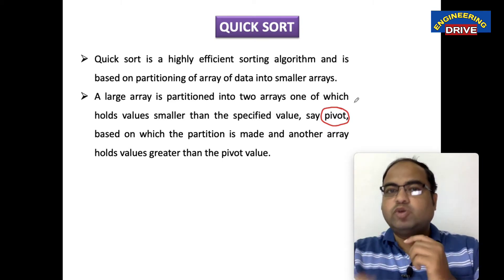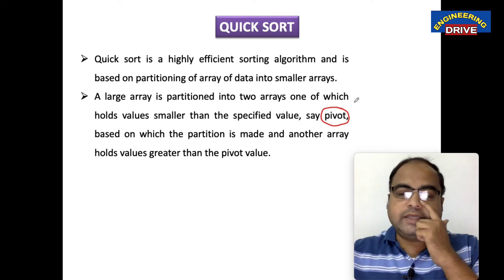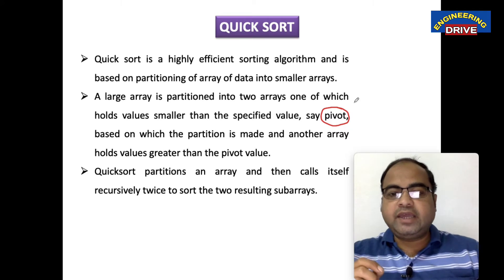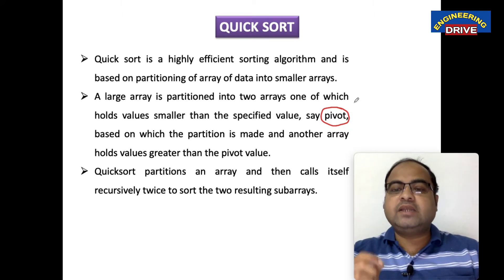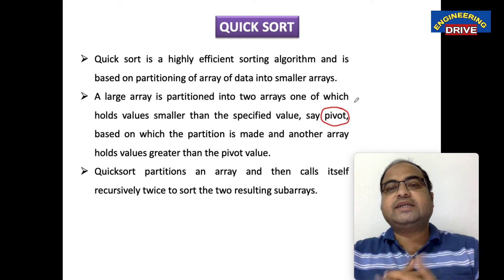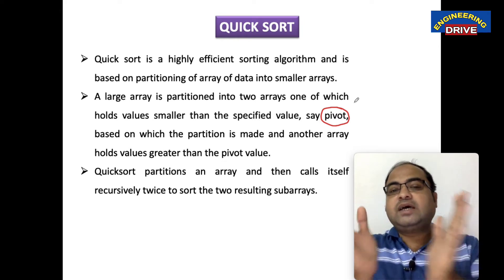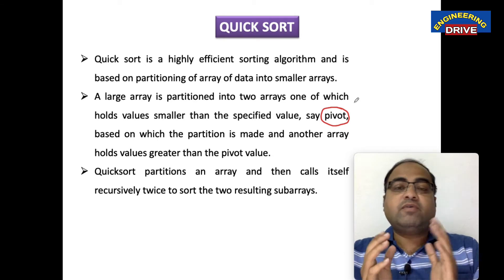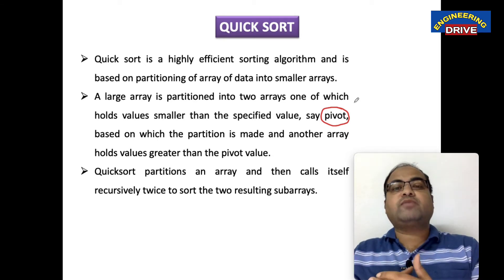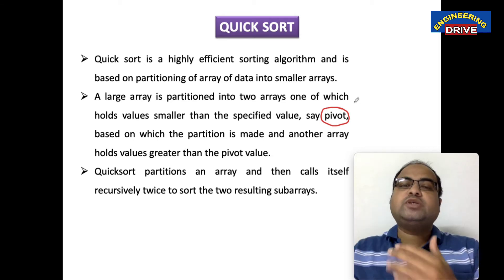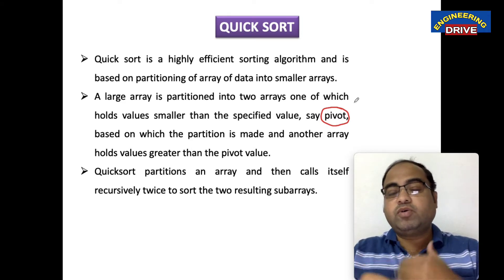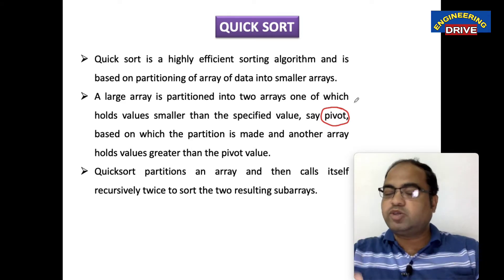How we can do that, I will show you with an example. Quicksort partitions an array and then calls itself recursively twice to sort the two resulting subarrays. Once the arrays have been divided based on the pivot element condition, we are going to perform sorting. This procedure will repeat for the remaining parts of the arrays also.